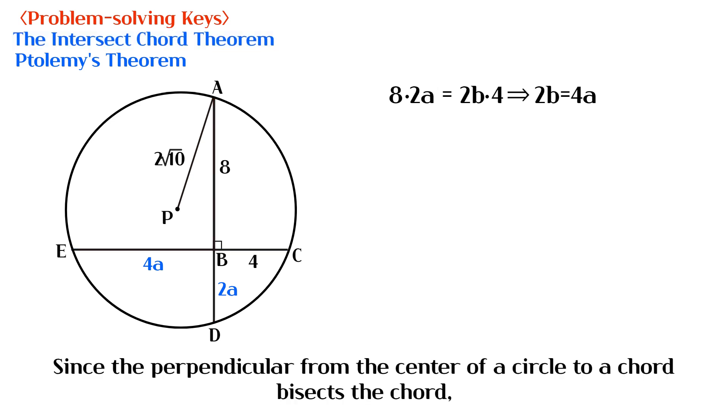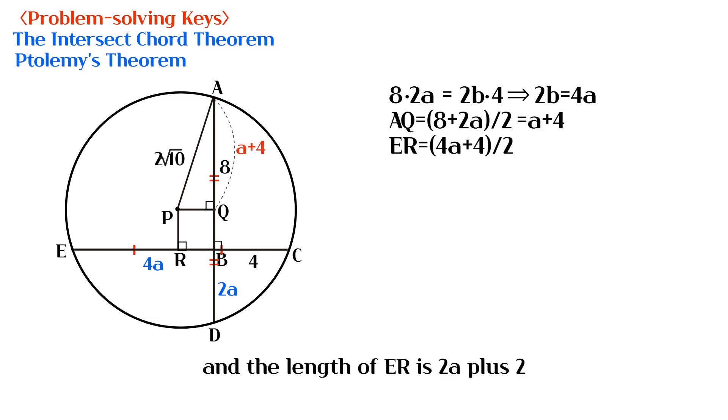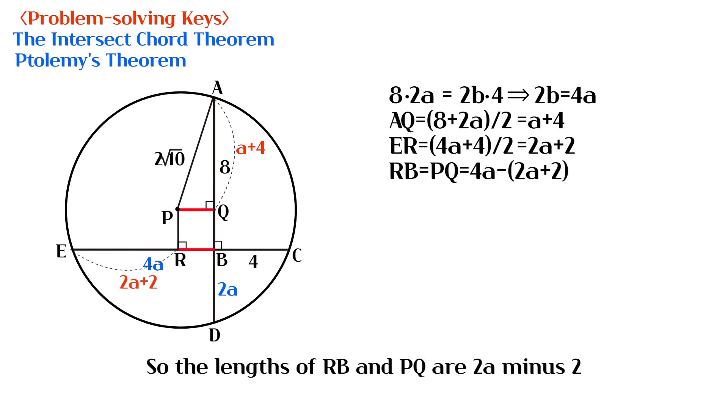Since the perpendicular from the center of a circle to a chord bisects the chord, the length of AQ is A plus 4, and the length of ER is 2A plus 2. So the lengths of RB and PQ are 2A minus 2.